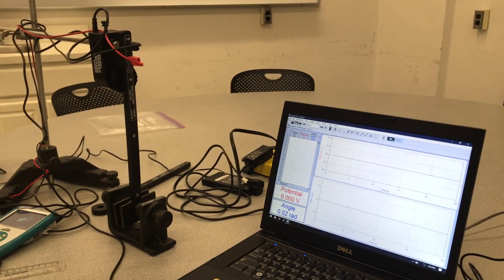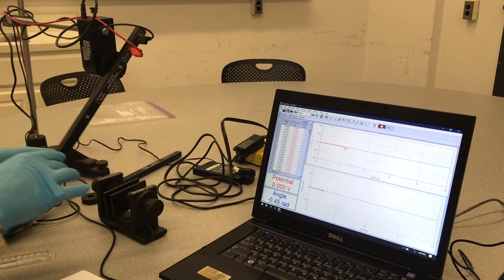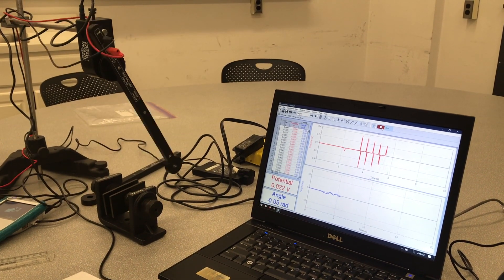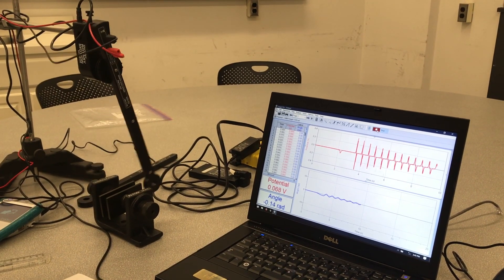So now I'll hit collect. Once I see this is going, I'll pull the wand back, let it go through. And now we've got a few nice runs, so I'll hit stop.